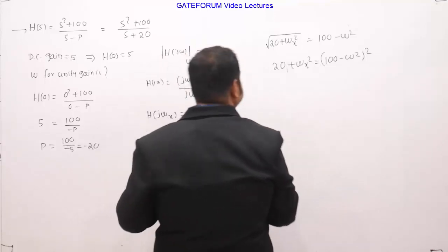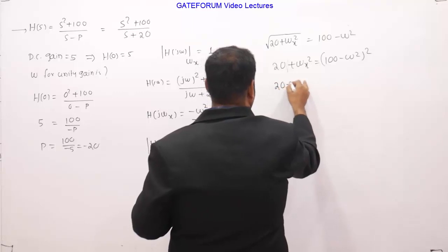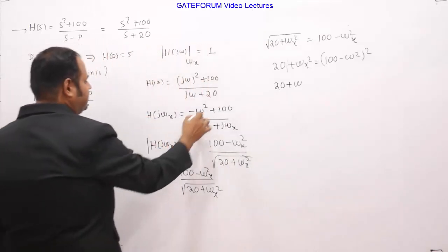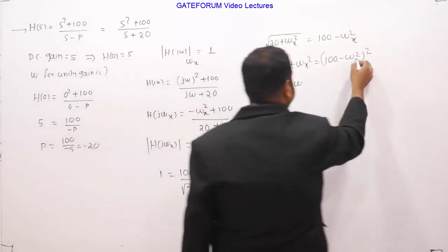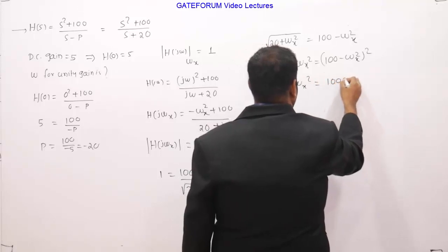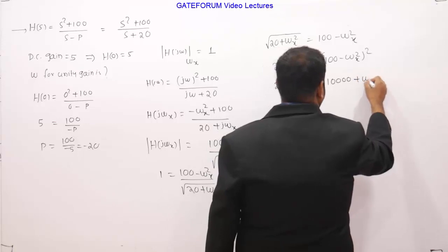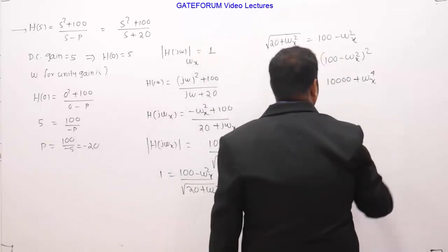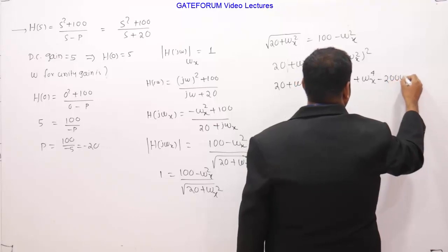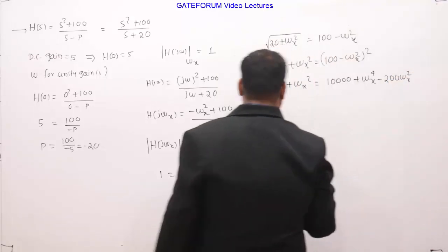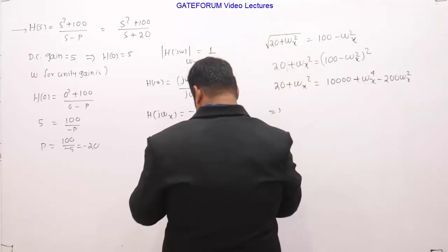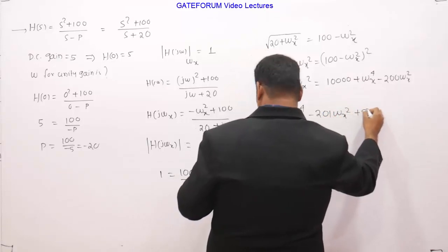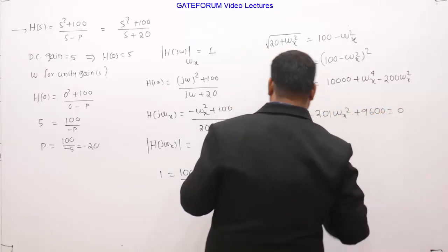So if I simplify this equation, it's like 20 square plus omega x square equals to 10,000 plus omega x to the power 4 minus 200 omega x square. So omega x to the power 4 minus 201 omega x square plus 9600 is equal to 0.